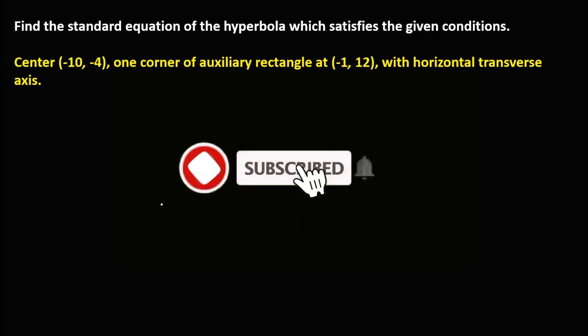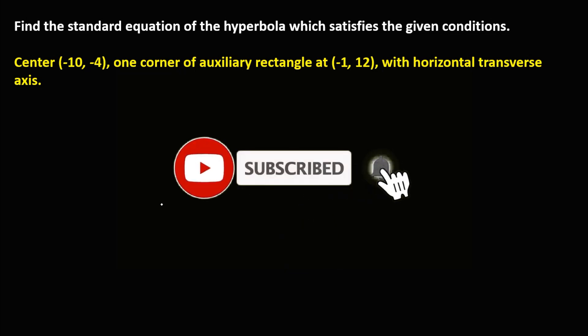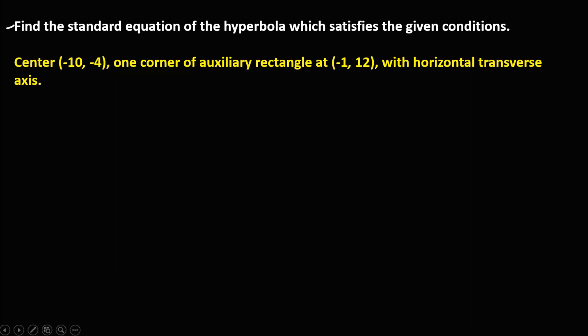Welcome to MathStorya. For this problem, find the standard equation of the hyperbola which satisfies the given conditions. The center is at negative 10 and negative 4, and one corner of the auxiliary rectangle is at negative 1 and positive 12, with a horizontal transverse axis.